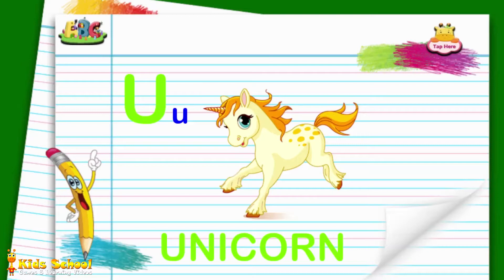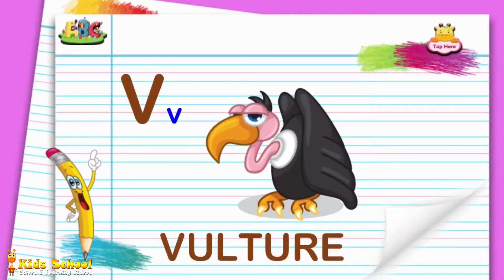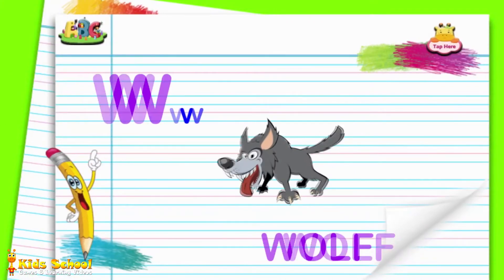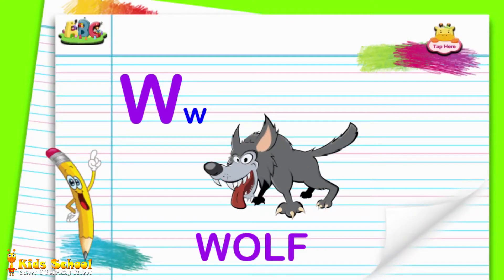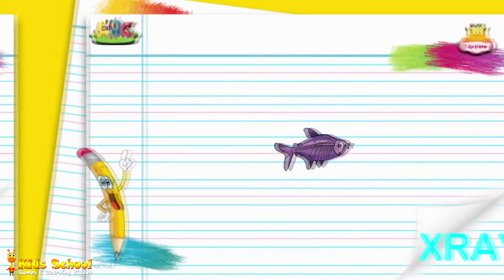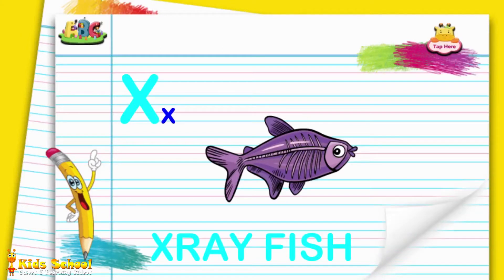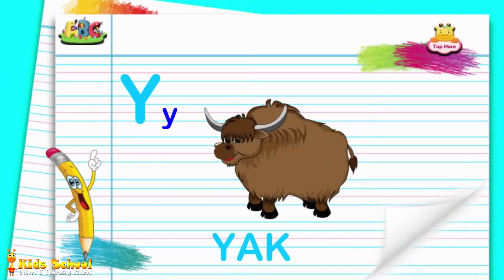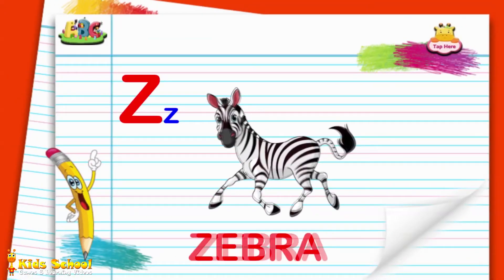U - Unicorn. V - Vulture. W - Wolf. X - X-ray Fish. Y - Yak. Z - Zebra.